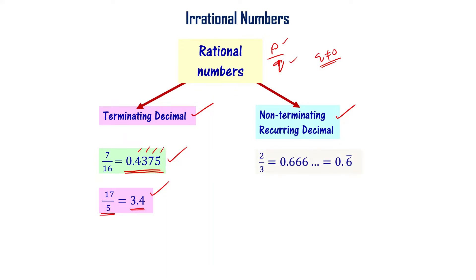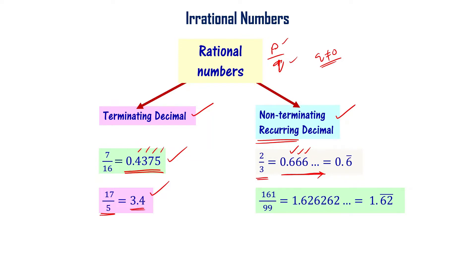2 by 3 is a rational number and its decimal expansion is 0.6666... and so on. It is non-terminating but recurring, with the digit 6 repeating. 161 by 99 gives 1.626262... and so on — here the two digits 62 are repeated, so it is a non-terminating but recurring decimal.